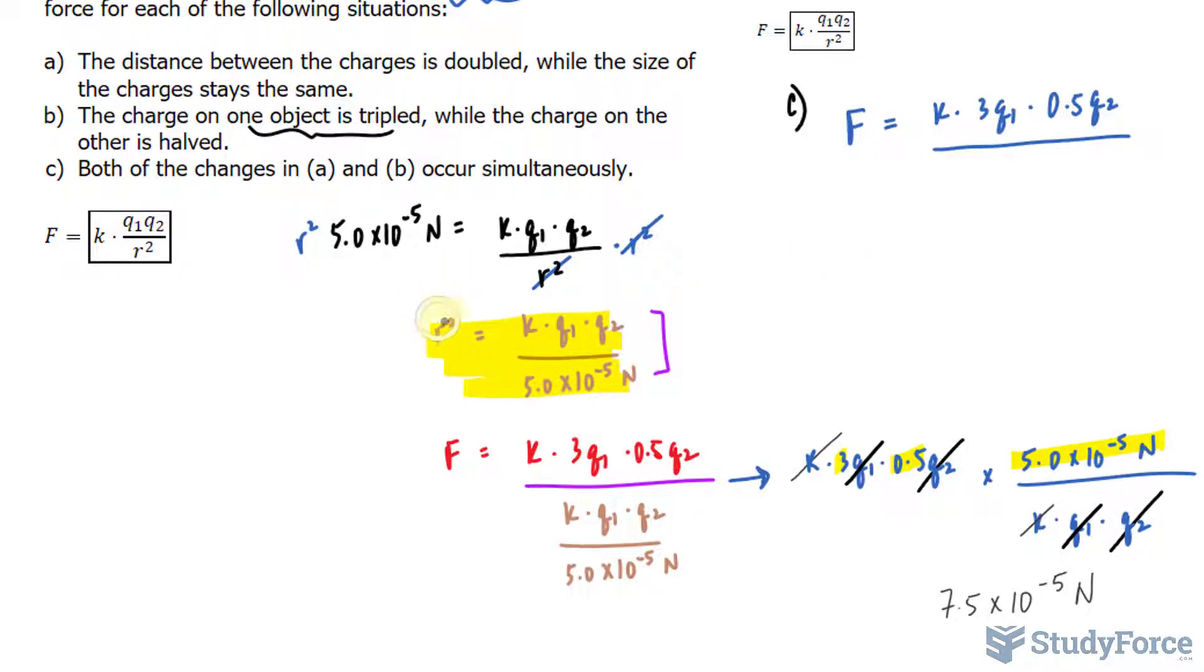To get R, we will square root both sides where we end up getting the square root of K times Q sub 1 times Q sub 2 over 5.0 times 10 to the power of negative 5. So all of this is being square rooted. And since the distance is being doubled and that represents R, we have to multiply 2 times R. So we will multiply all of this to 2. And don't forget that the equation for Coulomb's laws R squared. So we will now raise this to the power of 2.